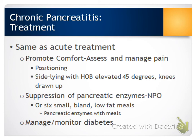We're always watching for signs and symptoms of obstruction — jaundice, dark urine, steatorrhea — and monitoring blood glucose levels. If elevated glucose levels are present, they need to be treated. Oftentimes, patients with pancreatitis are treated with sliding scale insulin based on their blood glucose levels.